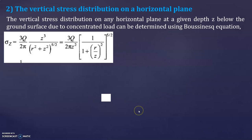Let us continue with the next pressure distribution diagram — vertical stress distribution on a horizontal plane. Last class I explained how to draw pressure distribution diagrams for isobars. Today we'll discuss vertical stress distribution on a horizontal plane. The vertical stress on any horizontal plane at a given depth z below the ground surface due to a concentrated load can be determined using Boussinesq's equation: sigma z equals 3Q divided by 2π, multiplied by z cubed divided by (r squared plus z squared) to the power 5/2. Alternatively, sigma z equals Q divided by 2π z squared, multiplied by 1 divided by (1 plus (r/z) squared) to the power 5/2.